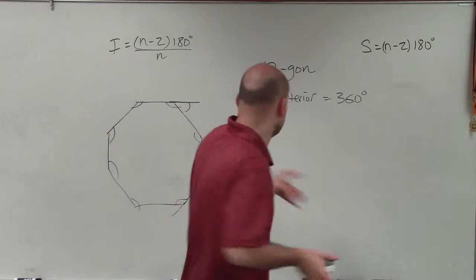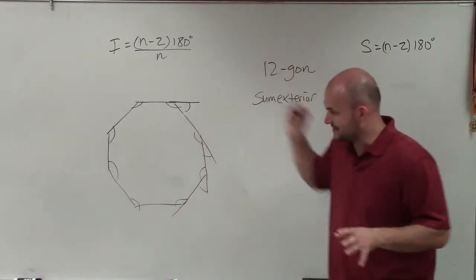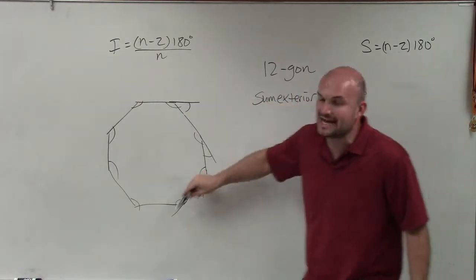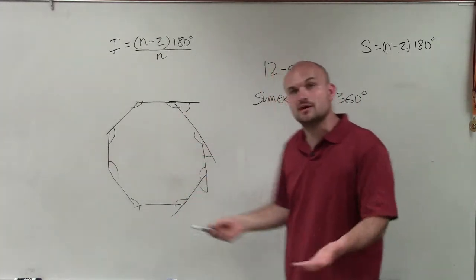So if I look at an octagon here in this case, and if I know the sum of all the angles, all I have to do is divide it by how many exterior angles I have, which is the same as the number of sides.